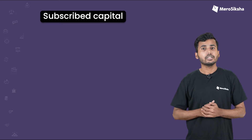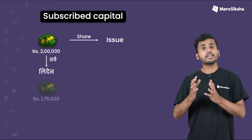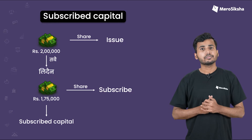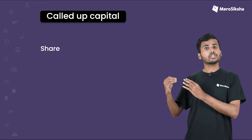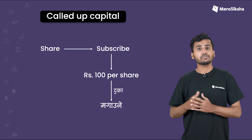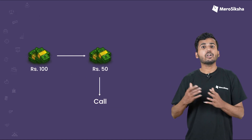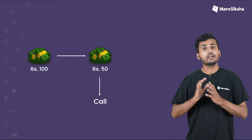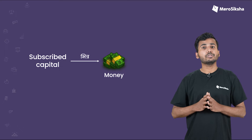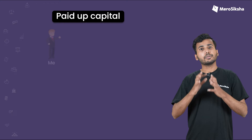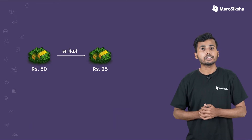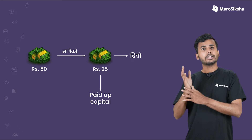The next type is Subscribed Capital — if out of the 2 lakhs issued, investors want to buy 2 lakhs, that is your Subscribed Capital. Then you can choose the same capital; if you want to call 100 rupees and then call 1 lakh, you can do so. The portion you call is your Called-up Capital, and what is actually paid becomes your Paid-up Capital.